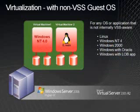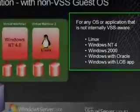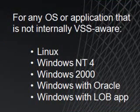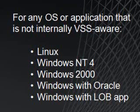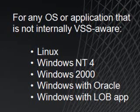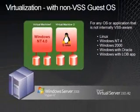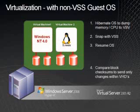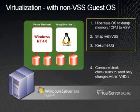When protecting environments, we have two different methods based on whether the guest operating system is VSS or non-VSS capable. For any guest OS or application that is not internally VSS capable — which might include variants of Linux, Windows NT4, Windows 2000, as well as line of business applications without a VSS writer — we treat them all as non-VSS-based guests. To protect these machines, we hibernate the machine when the backup is scheduled, securing what was in memory and the CPU and dumping it to a flat file.